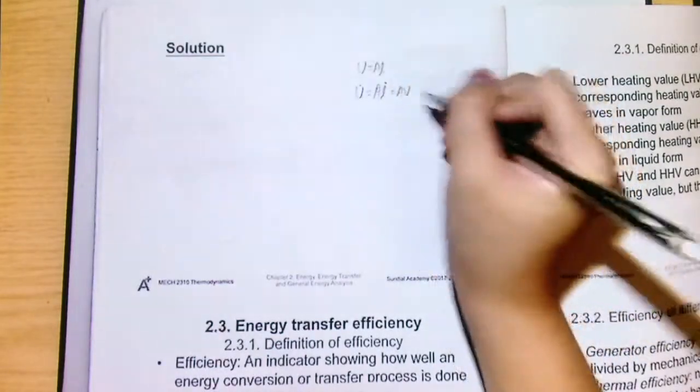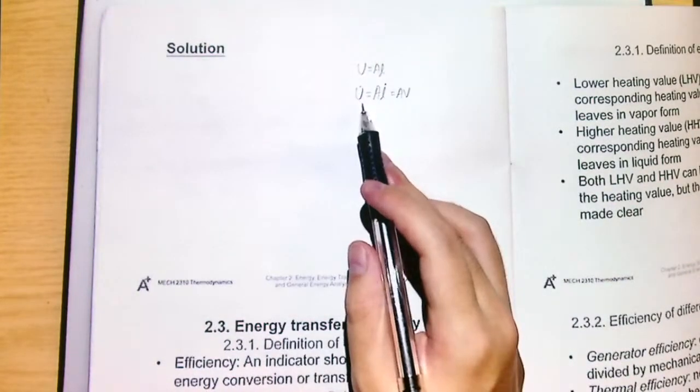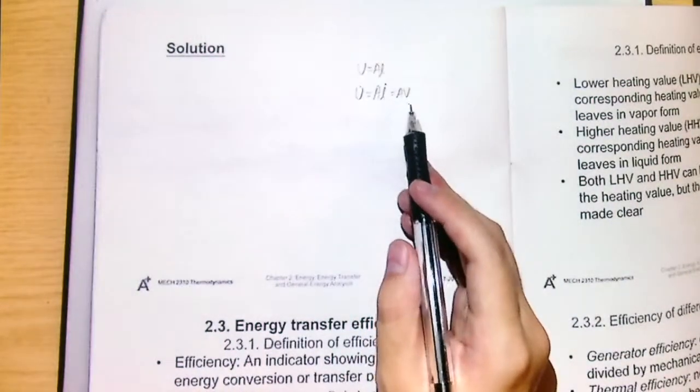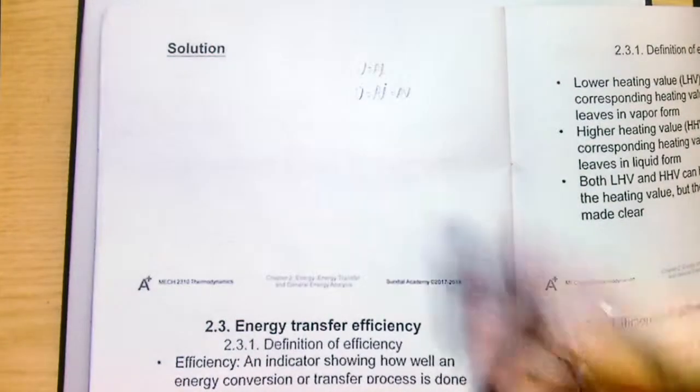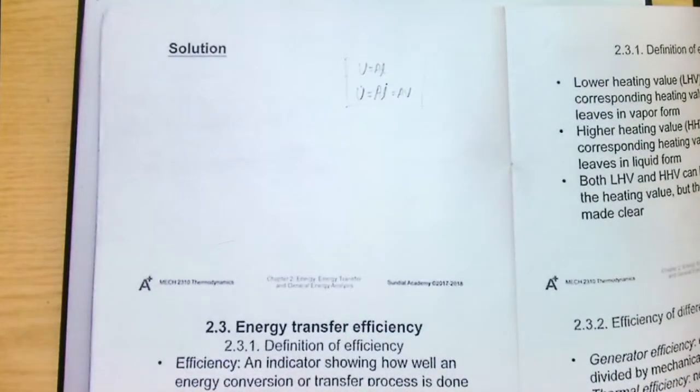But this V and this V are different. This V is the volume flow rate, where V dot is the volume flow rate, and this is the velocity. Okay. We will use this fact here to do this problem.